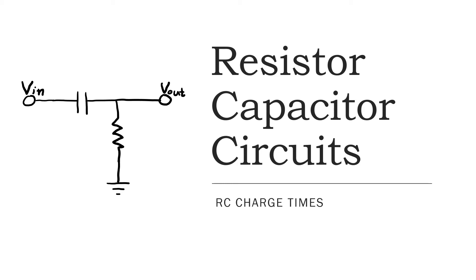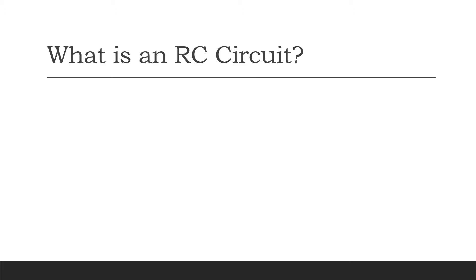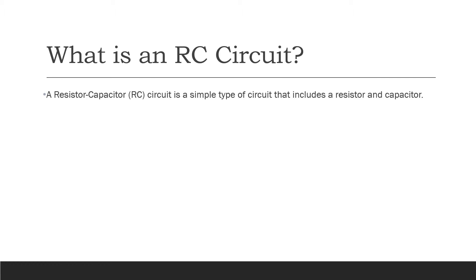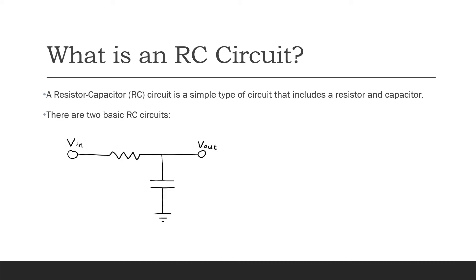Today we're going to talk about resistor capacitor circuits, known as RC circuits for short. An RC circuit is basically just a circuit with a resistor and a capacitor. There are two basic types of RC circuits. One has a resistor connected to the input voltage and a capacitor going to ground. The other has a capacitor connected to the input voltage and the resistor going to ground.